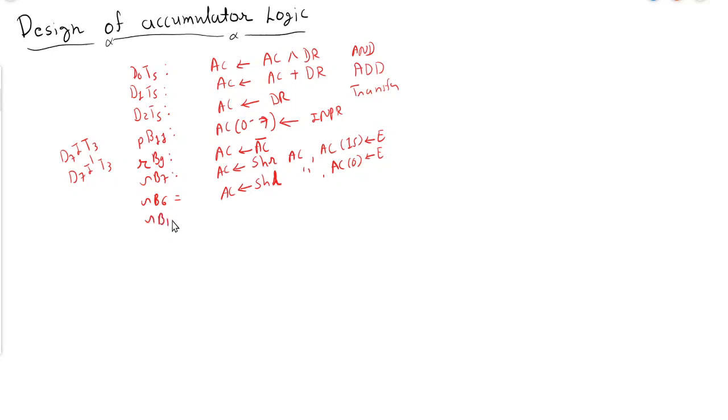Then RB11, we will set all the bits of accumulator to zero, means clear accumulator. And next is RB5 where we will increment the accumulator: AC equals AC plus one, increment accumulator.